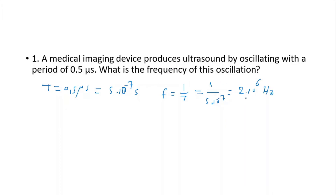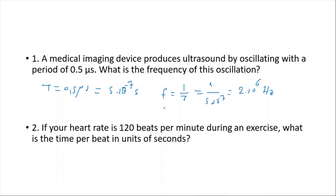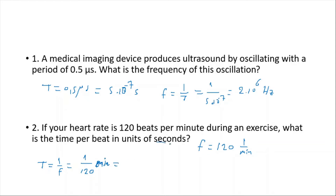This means the ultrasound device is producing sound with a frequency of 2 × 10⁶ Hz. The next question: if your heart rate is 120 beats per minute during exercise, what is the time per beat in seconds? The frequency is 120 per minute, so the period T = 1/f = 1/120 minutes. Converting to seconds by multiplying by 60 gives T = 0.5 seconds.